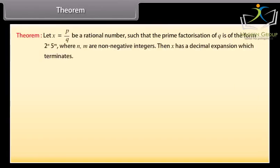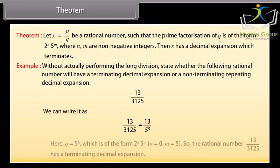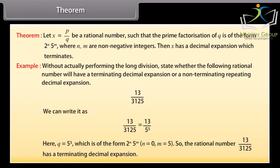Theorem: Let x = P/Q be a rational number such that the prime factorization of Q is of the form 2ⁿ × 5ᵐ, where n and m are non-negative integers. Then x has a decimal expansion which terminates. Example: State whether 13/3125 has a terminating or non-terminating repeating decimal expansion. We write 13/3125 = 13/5⁵. Here Q = 5⁵ is of the form 2ⁿ × 5ᵐ with n = 0 and m = 5. So the rational number 13/3125 has a terminating decimal expansion.